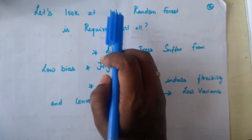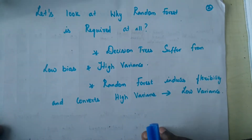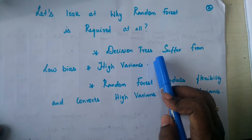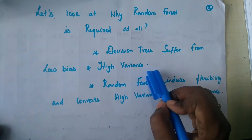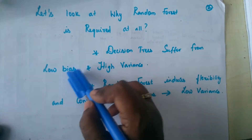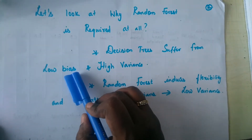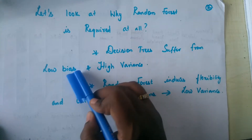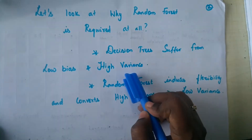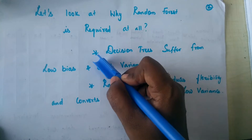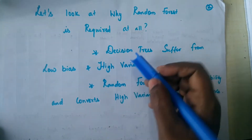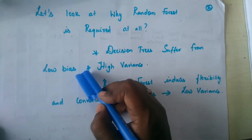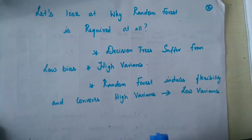So let's look at why we need a random forest in the first place. Decision trees suffer from low bias and high variance. Low bias means the model is able to accommodate the training data well. But high variance means the performance is good for the training dataset whereas the performance drops for the test dataset. So low bias is a positive thing whereas high variance is not.